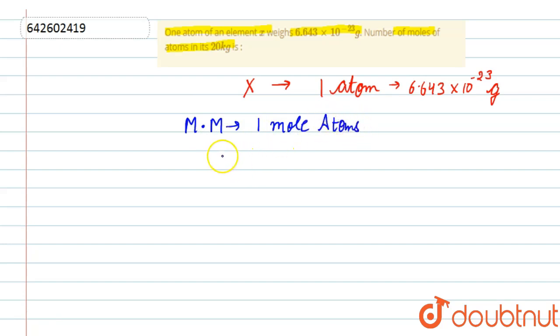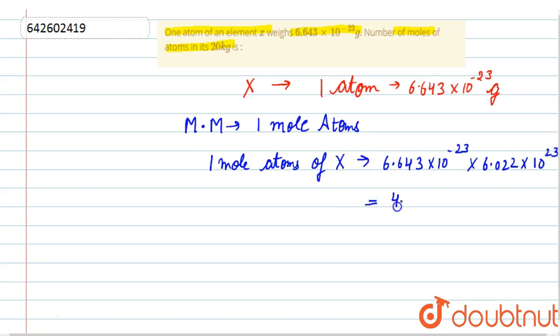So one mole of atoms of X will weigh 6.643 × 10^-23, and we know 1 mole is equal to 6.022 × 10^23. After solving this we will get 40 grams.